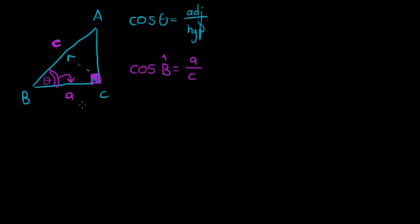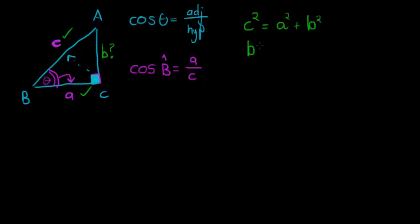Another thing we're going to use for the cosine rule comes from having the 90-degree angle. If we have it, we can also find side length B using Pythagoras. Pythagoras says the hypotenuse squared equals the adjacent side squared plus the opposite side squared. So B squared equals the hypotenuse squared minus the adjacent squared. In developing the cosine rule, we're going to use both this fact and that cosine relationship.